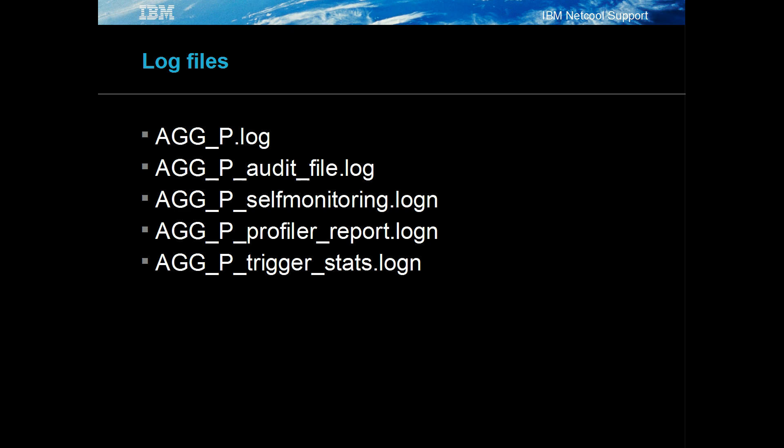The object server has five main log files for helping to identify performance issues: the object server log, which logs the memory usage as well as warning and error messages; the audit log for user and system audit messages; the self-monitoring log for logging the set thresholds; the profile log for logging the object server's client usage; and the trigger statistics log for logging the performance of the triggers.